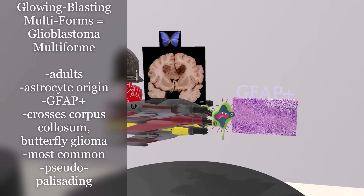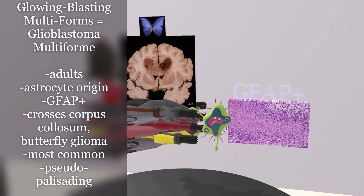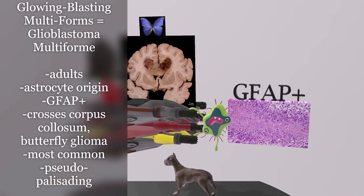Here we're going to talk about glioblastoma multiforme, which classically presents in adults. If we take a look right behind the rockets, there is this astrocyte, which reminds us that glioblastoma multiforme is of astrocyte origin. That's why this specific tumor will be GFAP positive.